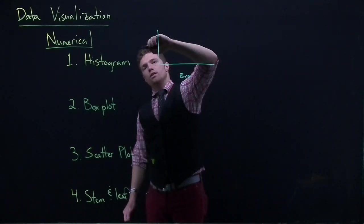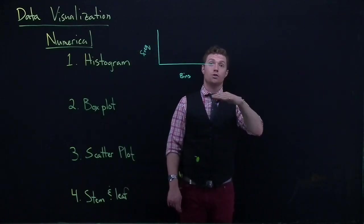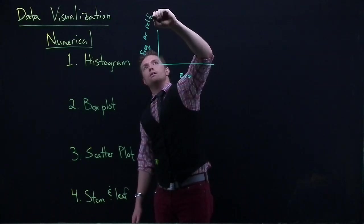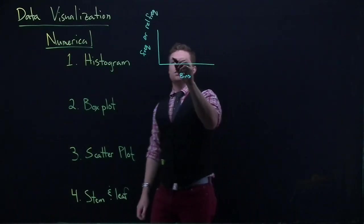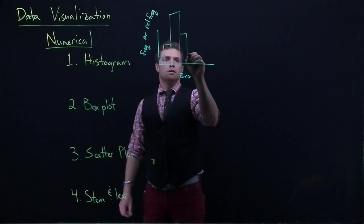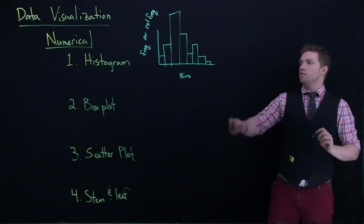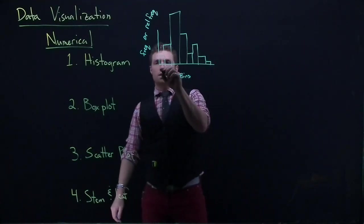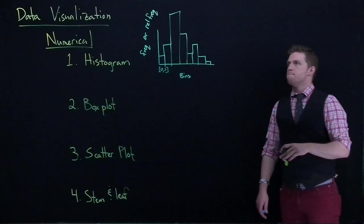So if this is the bins, then this is either the frequency, which would just be the raw counts, like how many 10 people are in this group, 15 people are in this group. Or you can do it with the relative frequency. And that would be like 10% of the group fell in here, 15% went in this bin. And so what you wind up getting is something that might look like this, where we would see the frequencies of how many times did people land in these individual bins. And that is a histogram.